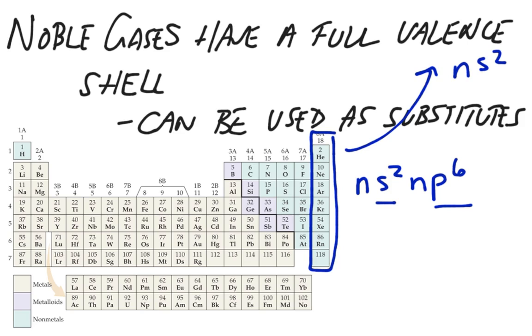But the rest of them end with S2P6, which means that a next higher energy level is going to start out. For example, neon ends in 2S2, 2P6. The next element to come along, sodium, is going to start out with 3S.